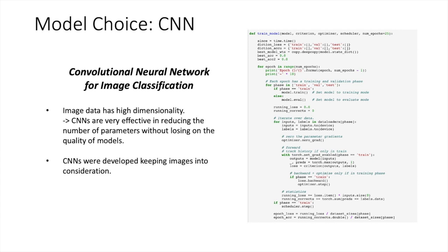So here we use convolutional neural network because our model is a very classic image classification problem. And another major advantage is that the dependence from prior knowledge and human effort in feature design is very small in this neural network. Also, CNNs are very efficient in reducing the number of parameters without losing on the quality of models. And CNN was developed keeping images into consideration.